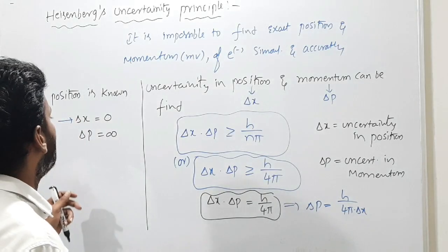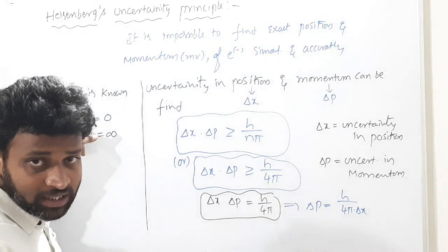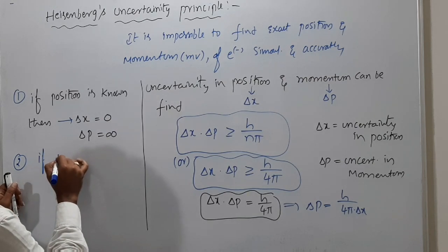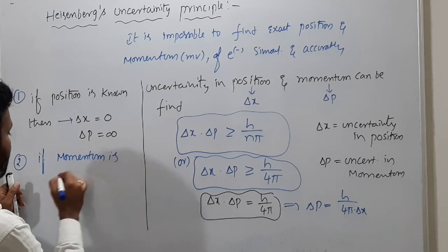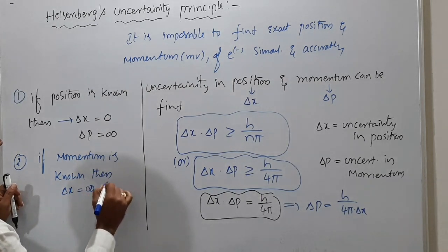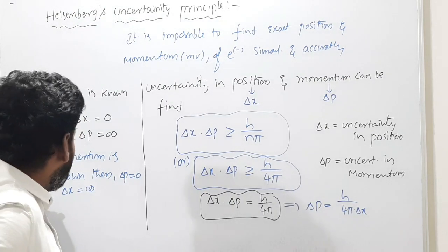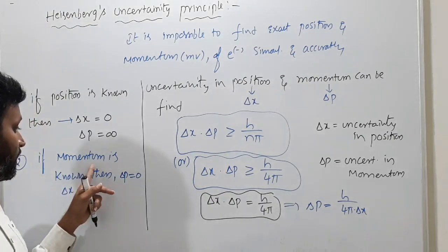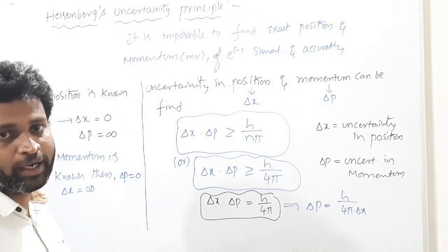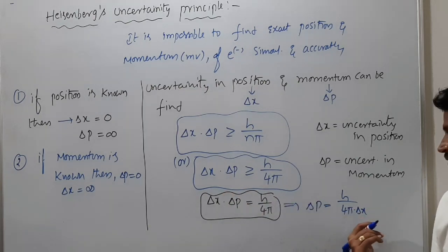These two cases are very important. If position is known: delta X = 0, delta P = infinity. If momentum is known: delta X = infinity, delta P = 0. Please note down all these things — have a screenshot and write down everything.